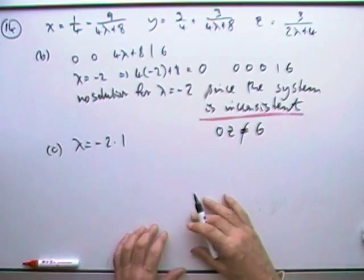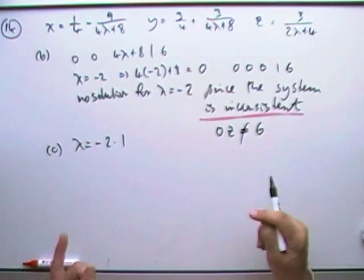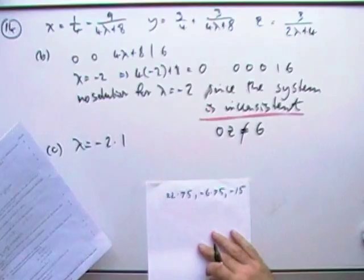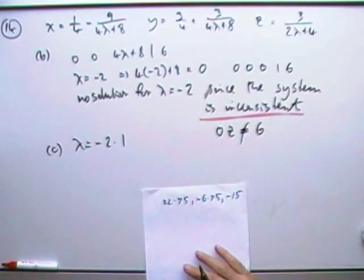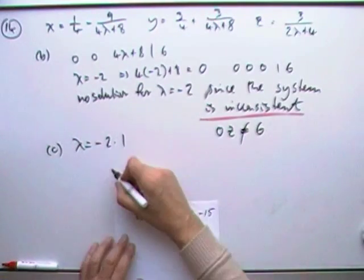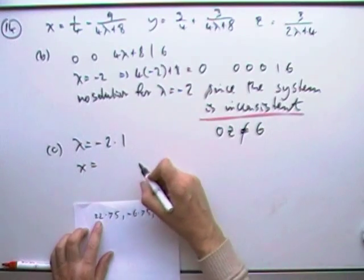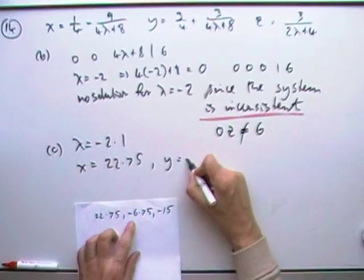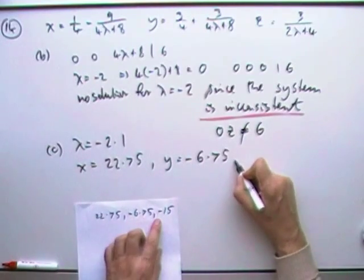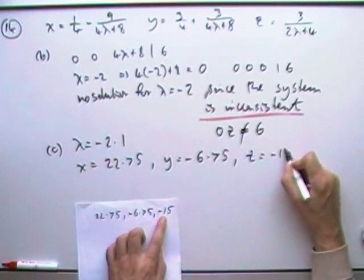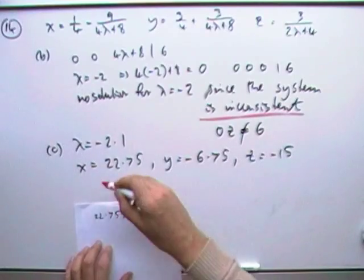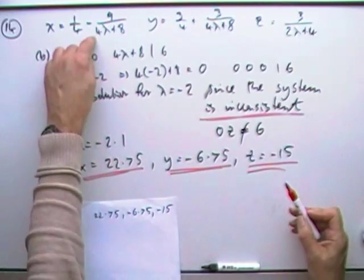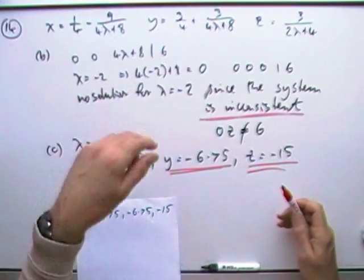Or I'll just sit in a bucket of vinegar and stick pins in my head. I'm just back from putting that all into the calculator. So when λ is equal that, I think I get x is equal to 22.75, y is equal to -6.75, and z is equal to -15. But you would show your working by having the formulas with those numbers, the -2.1 going into it.